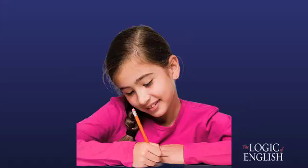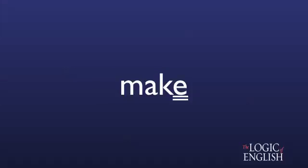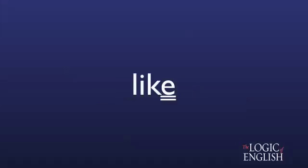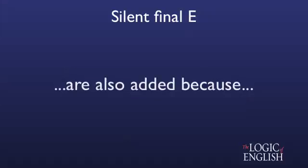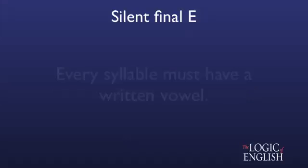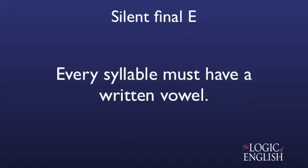Knowing about silent final E's also helps students to confidently know when to use a K versus a C. 'Make' must be spelled with a K, since changing it to a C spells 'mace.' Likewise, 'like' must be spelled with a K, for with a C it says 'lice.' Silent E's are also added because every syllable must have a written vowel.